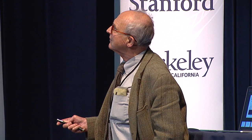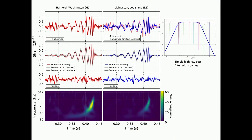Here then is the detection that was made by that system, back in September 2015. I'll walk you through this — you may have seen this in the newspapers. This is a signal. Time is on this axis, and this is amplitude of strain — 10 to the minus 21 strain right there.